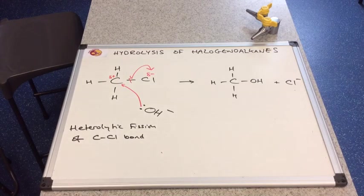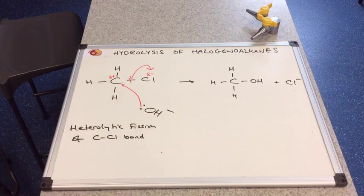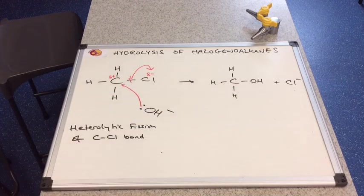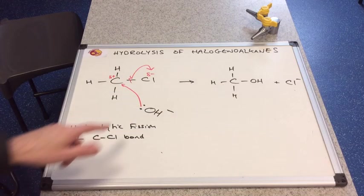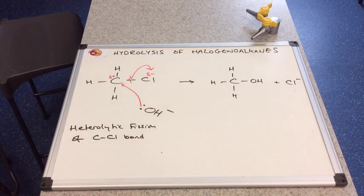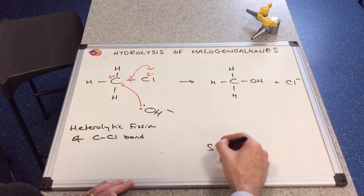We'll come on to the name of the mechanism now. So you can see we have not got an addition reaction because we haven't got two reactants becoming just one product. Effectively we've swapped the chlorine for the hydroxide ion, so we have what's called a substitution reaction.